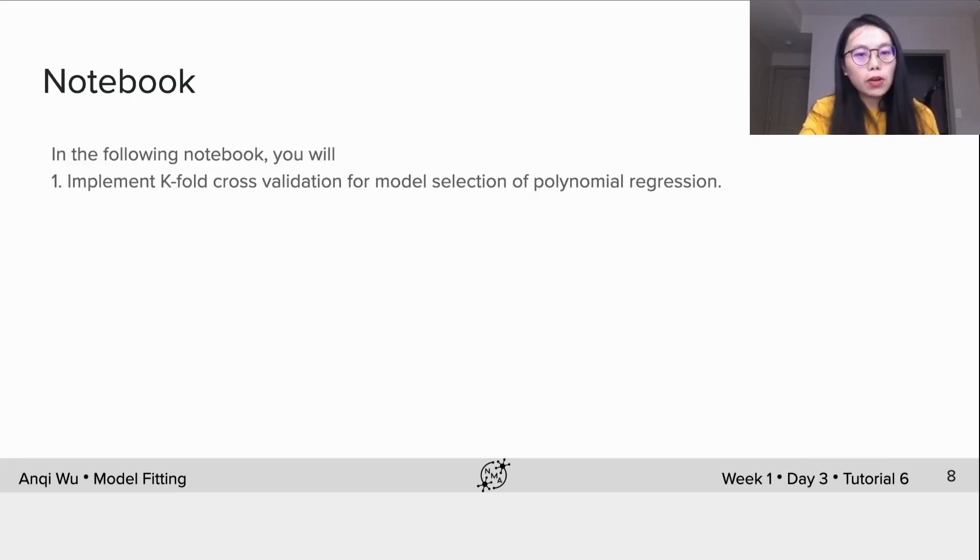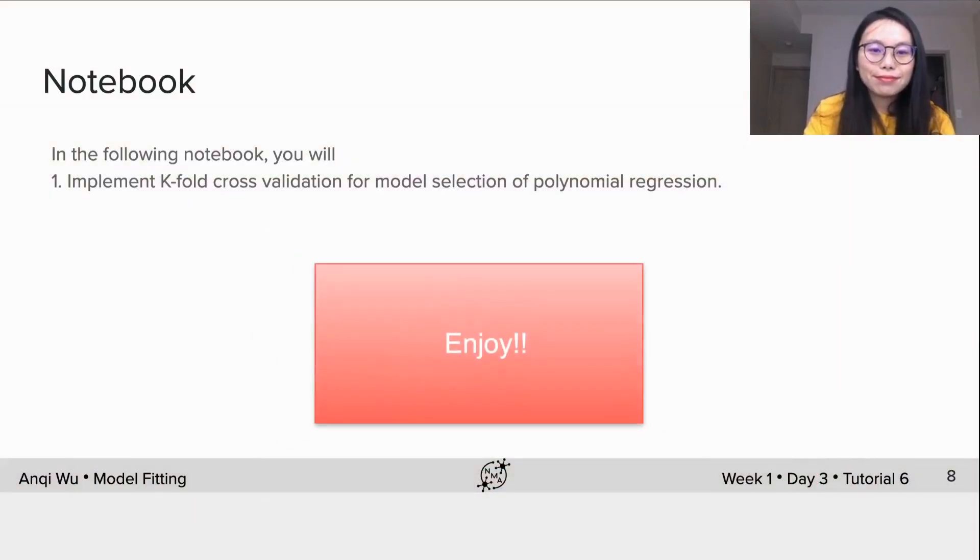So in the following notebook, you will implement k-fold cross-validation for model selection of polynomial regression. I talked about leave one out, but we don't expect you to do exercise on that in the tutorial session, okay? Hope you all enjoy!